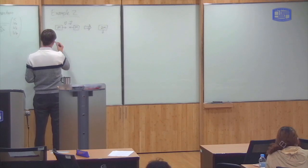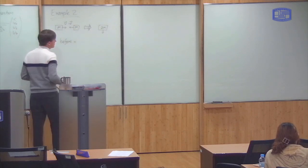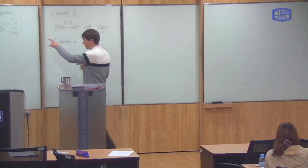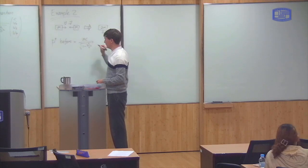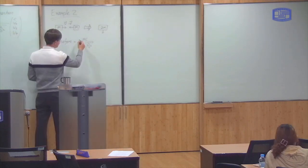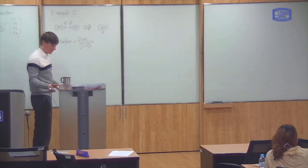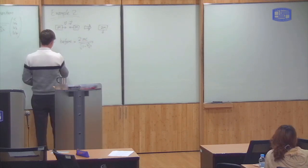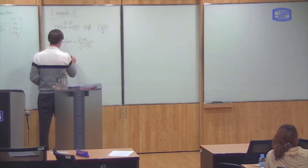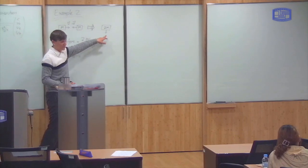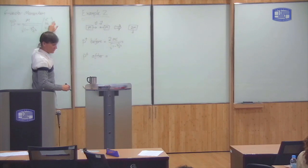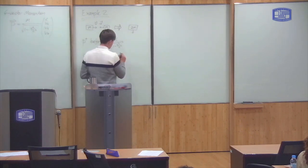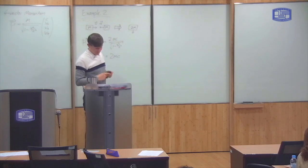But if we look at the time component of momentum, from that formula it's MC divided by the square root of one minus V squared over C squared, and it's the same for both masses, so it's just twice that. Afterwards, you've got one object of mass 2M with velocity zero, so it's just 2M times C. And it's not conserved — so that's a problem.